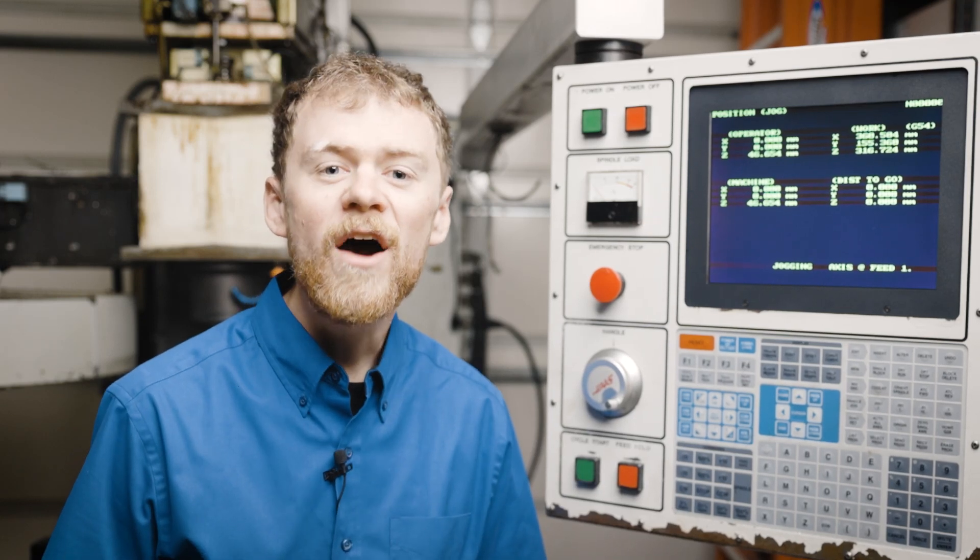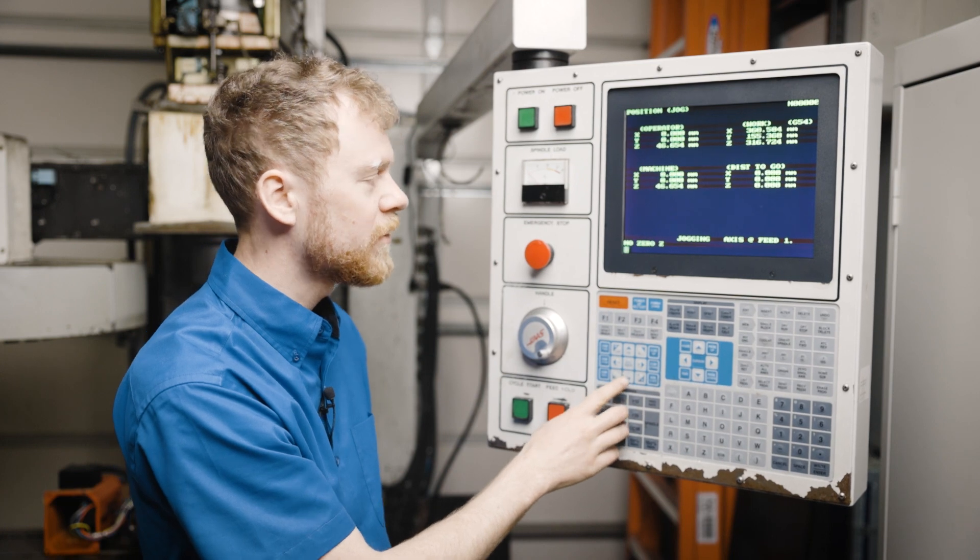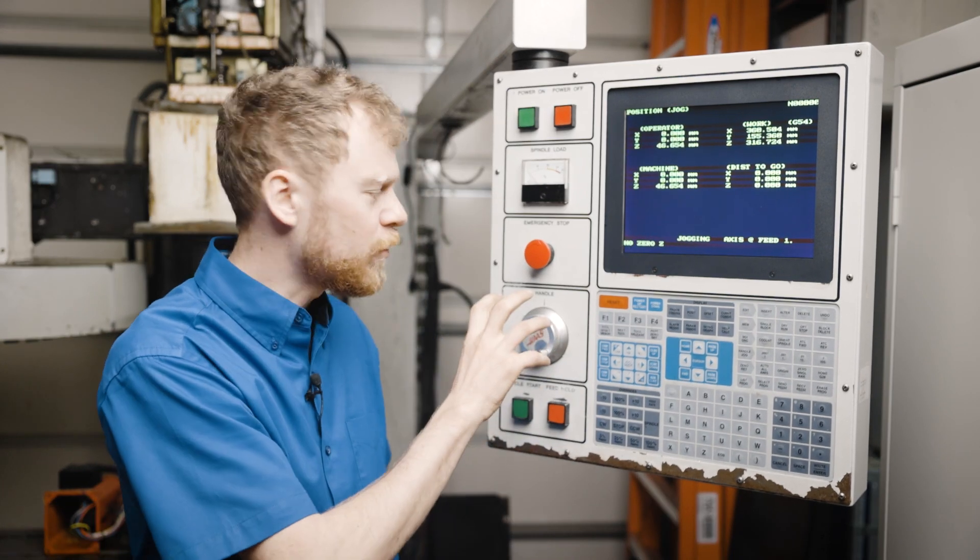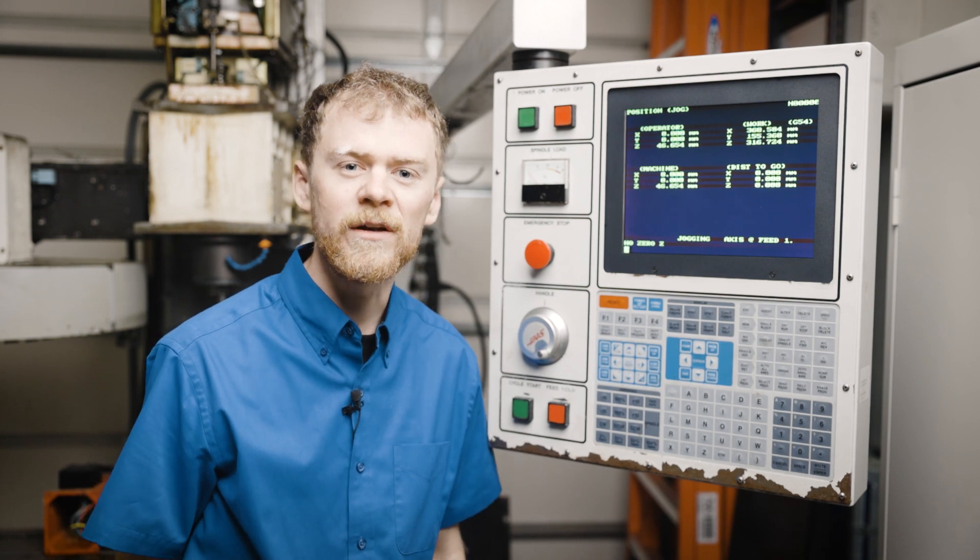Setting 53: how and when to use it. Have you ever gotten a 'no zero Y,' 'no zero X,' 'no zero Z,' and you're unable to jog your machine? What if your machine tool is inside of a part and you need to get it out?